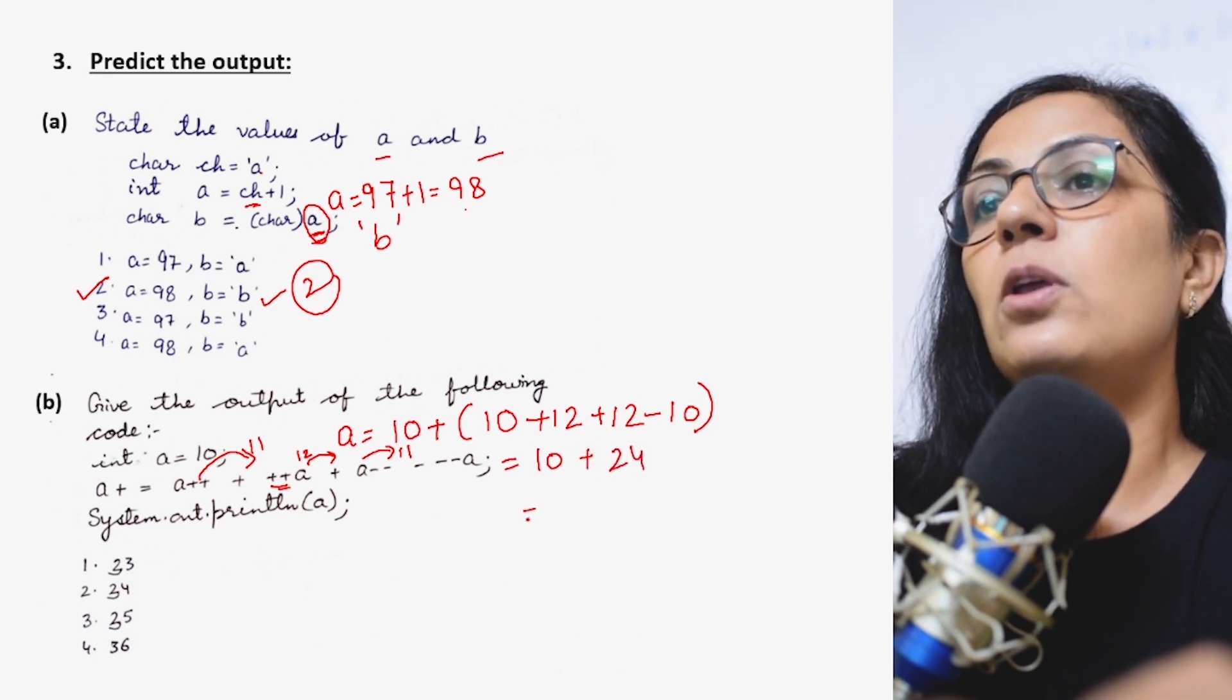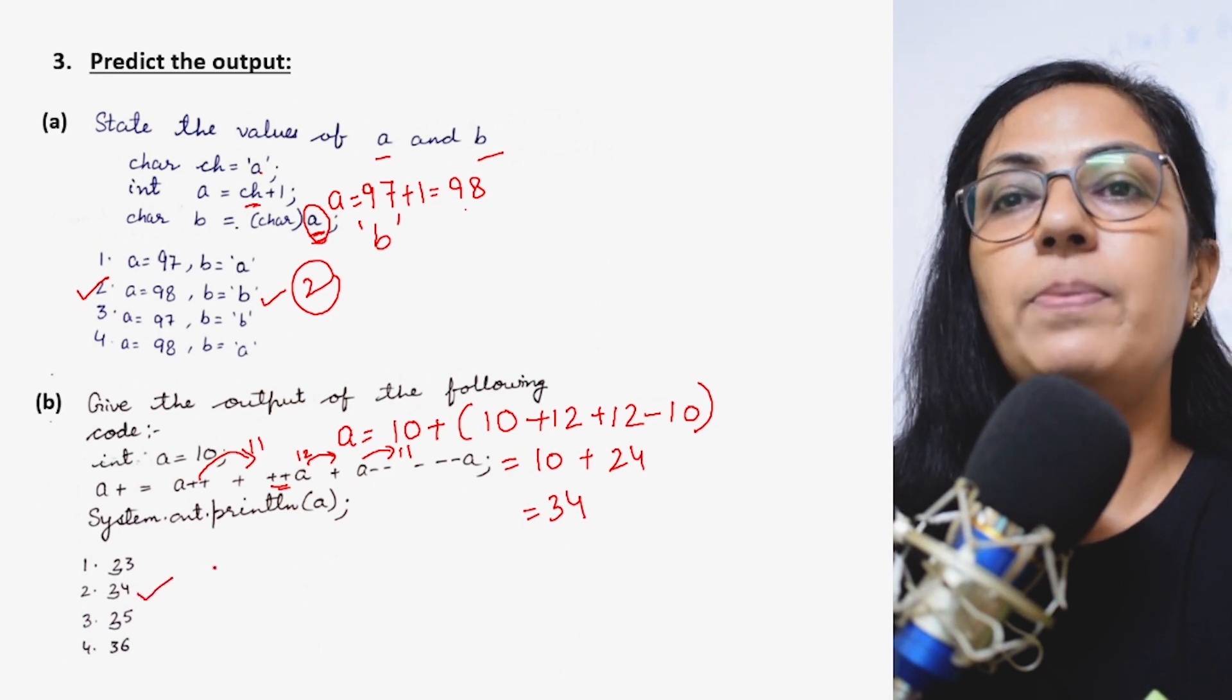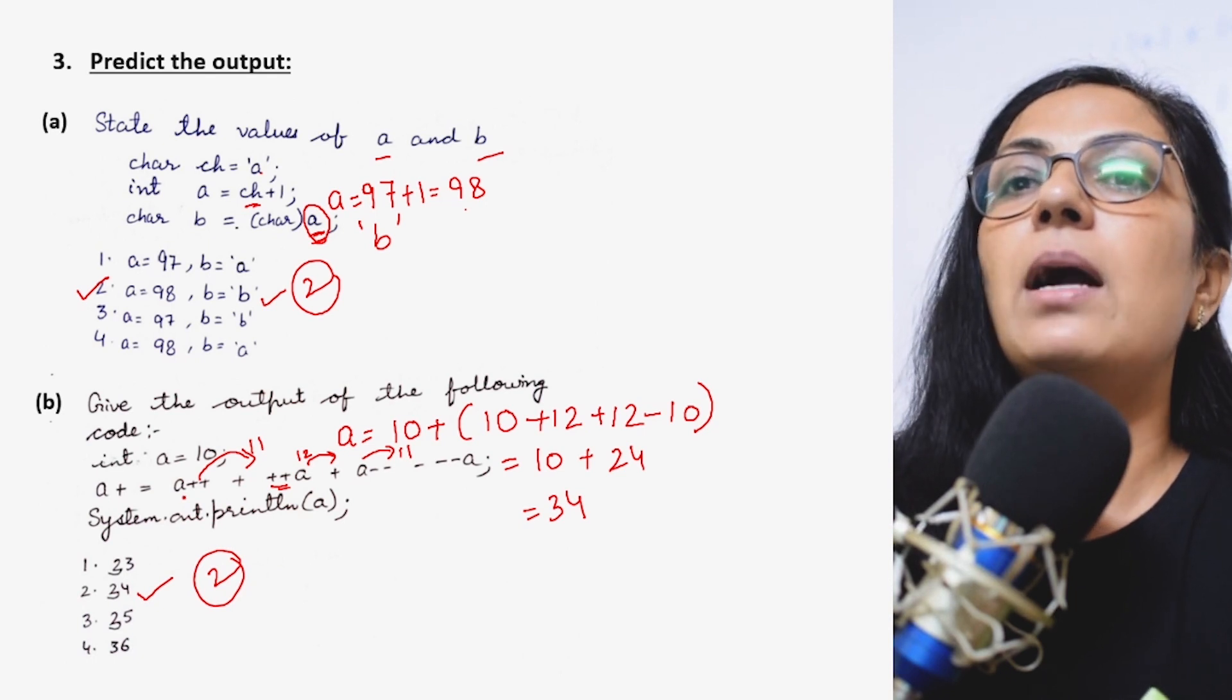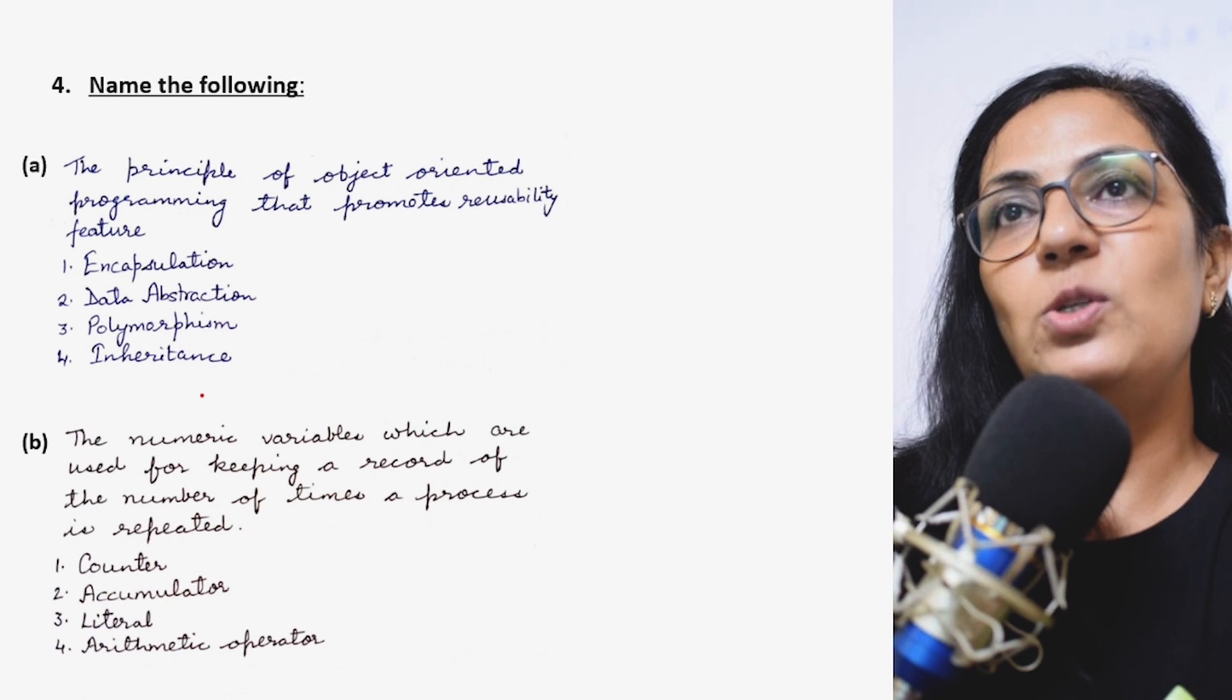So we have now 10 plus 24, so your answer is 34. Children, all these type of questions, please solve these questions. Don't directly blindly put a tick mark or select any of the correct options.